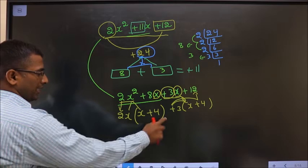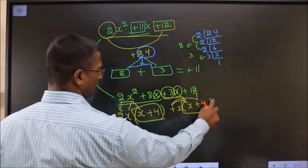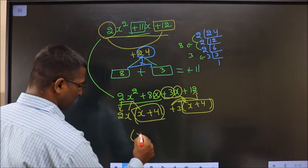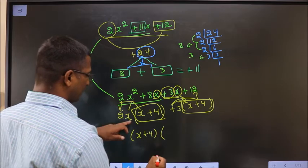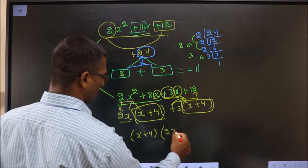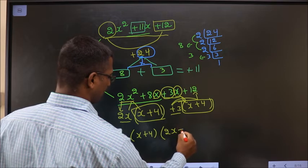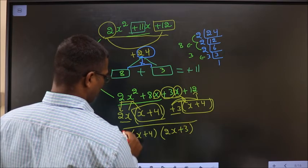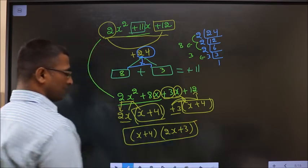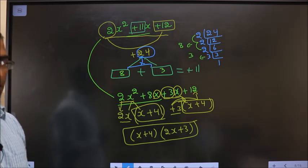Take x plus 4 common. So what do we get? x plus 4 outside. Here left with 2x and here left with 3. Thus we have factorized. This is the answer.